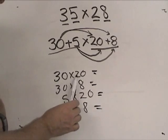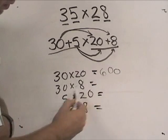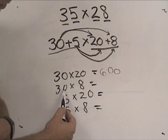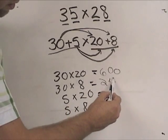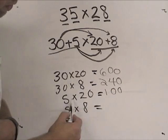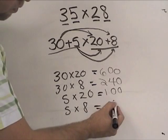30 times 20, well, 3 times 2 is 6, and I'd add my two zeros on the number, so it'd be 600. 30 times 8 is 3 times 8, which is 24, and add a zero to it. And 5 times 20 is 100. 5 times 2 is 10, and add a zero to it. And 5 times 8 is 40.